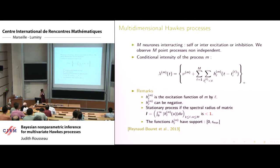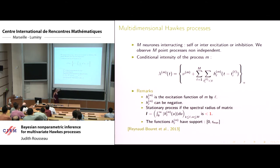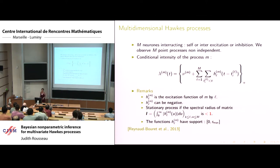H_{LM} describes the excitation or interaction of neuron L on neuron M. It can be positive or negative, but in the theory it will be only one sign. There is quite a lot of theory on these processes. In particular, it's been proved that if the matrix rho — whose (L,M) coordinate is the L1 norm of H_{LM} — has spectral radius strictly less than 1, then you have a stationary process. That's the situation we'll study.